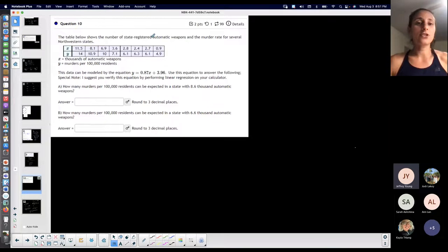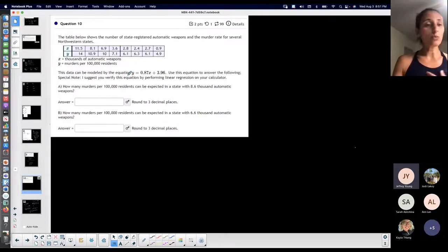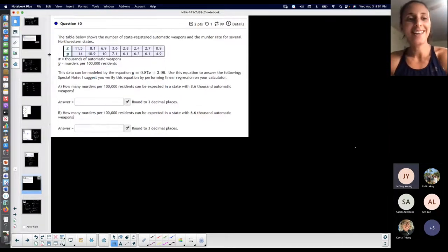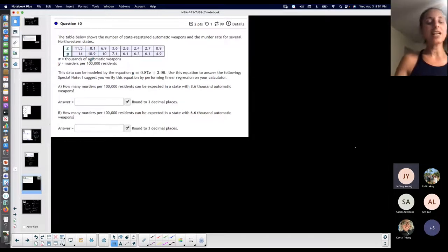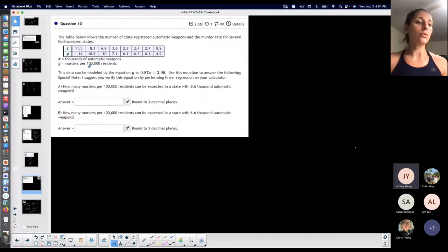Let's see. The table below shows the number of state registered automatic weapons and the murder rate for several northwestern states. They defined my x and y for me. My x is thousands of automatic weapons and my y is murders per 100,000 residents. You would assume that the number of murders would be dependent on the amount of automatic weapons for this example. This is not opinions, just based on what's in front of me.